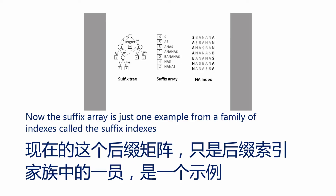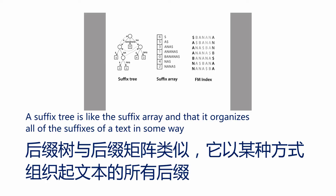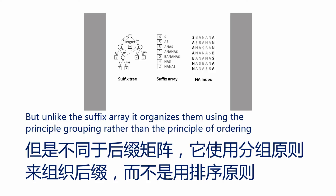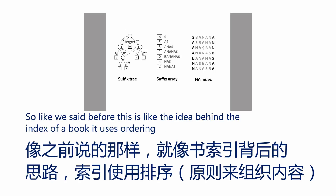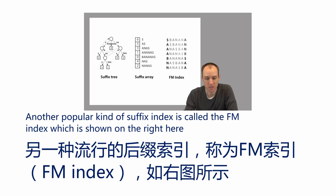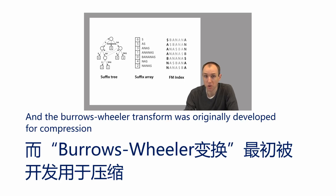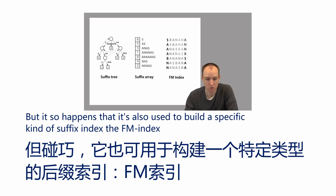The suffix array is just one example from a family of indexes called suffix indexes. Another kind of suffix index is the suffix tree, shown on the left. A suffix tree organizes all of the suffixes of a text, but unlike the suffix array, it uses the principle of grouping rather than ordering — more like the aisles of a grocery store than the index of a book. Another popular kind of suffix index is the FM index, shown on the right, which is based on the Burrows-Wheeler transform, or BWT. The Burrows-Wheeler transform was originally developed for compression, but it's also used to build the FM index.